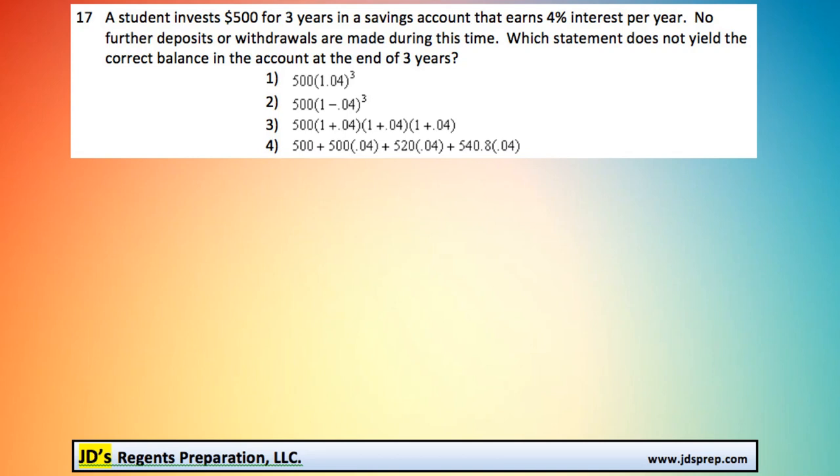This is problem number 17 from the June 2016 Algebra Regents exam. The question states a student invests $500 for three years into a savings account that earns 4% interest per year, and no further deposits or withdrawals are made during this time. Which statement does not yield the correct balance in the account at the end of three years?